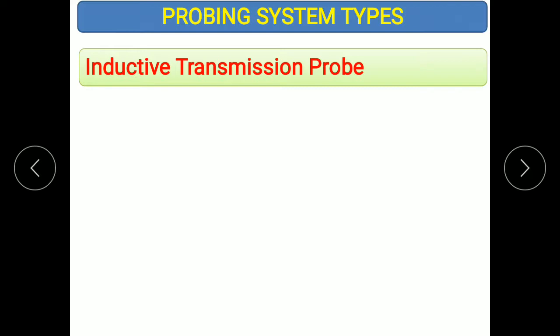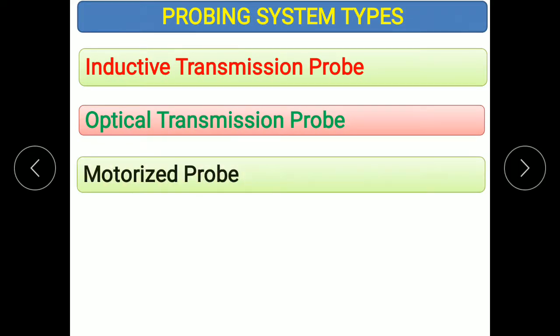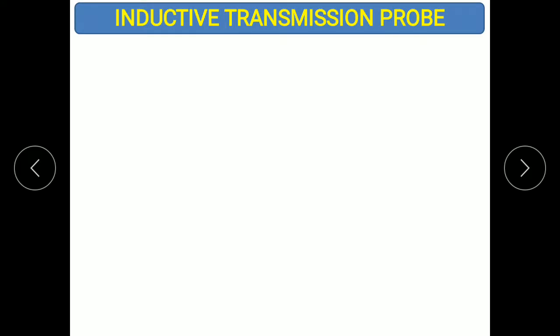There are different types of probing systems. The first one is the inductive transmission probe. Next is the optical transmission probe. Third is the motorized probe, and the fourth is the multiple stylus probe. We shall discuss each one in detail.